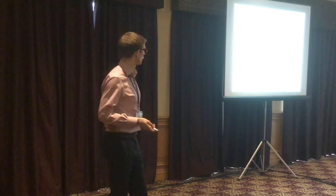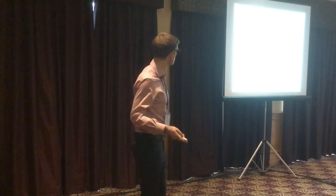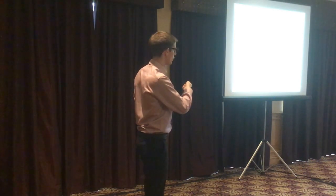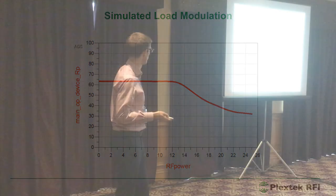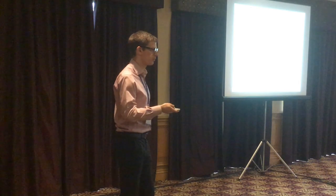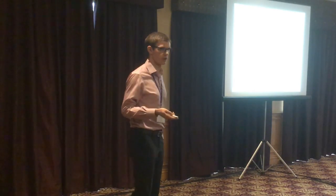We also did large signal simulations. The interesting result here is the real part of the impedance presented to the main amplifier versus input power. Starting at low power with a two R-opt impedance of about 64 ohms, as input power increases the auxiliary amplifier switches on and load-pulls the main device. At full output power, the main is seeing a load of 32 ohms, which is R-opt for this device. You can actually see the Doherty modulation happening in simulation, giving us a lot of confidence in the design.